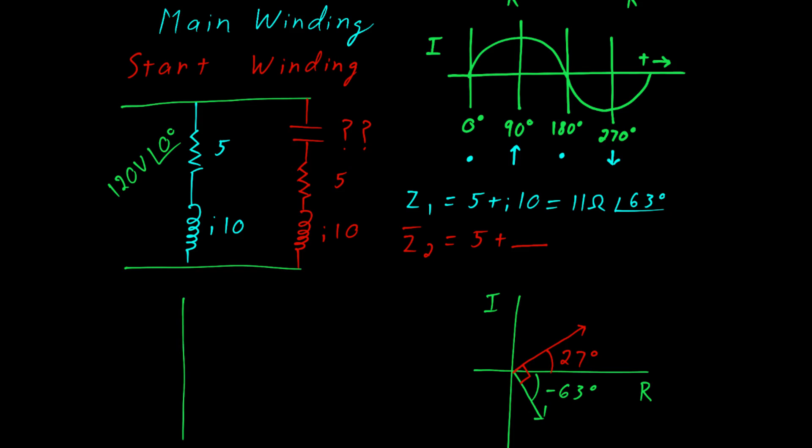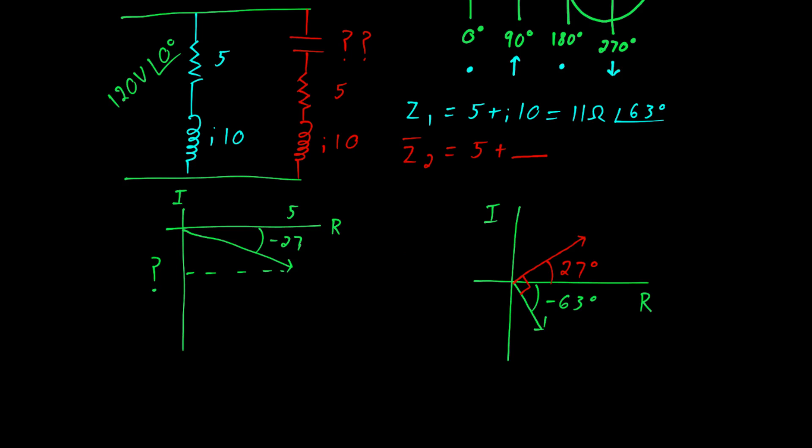We can use a bit of trigonometry to solve for that. Here in the real part we have 5 ohms and we're looking for the imaginary part. Using trigonometry we know that the tangent is equal to the opposite over the adjacent and we solve for the opposite side by multiplying the adjacent by tan theta which in this case is 5 times tangent of negative 27 degrees which gives us a reactive component of negative 2.5 and we write that up here so Z2 is equal to 5 minus J 2.5 or if you prefer we can put that into polar form as 5.6 at an angle of negative 27.